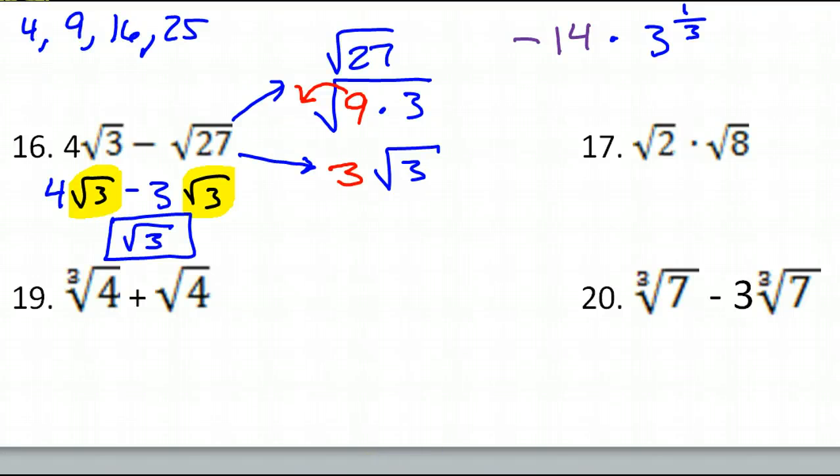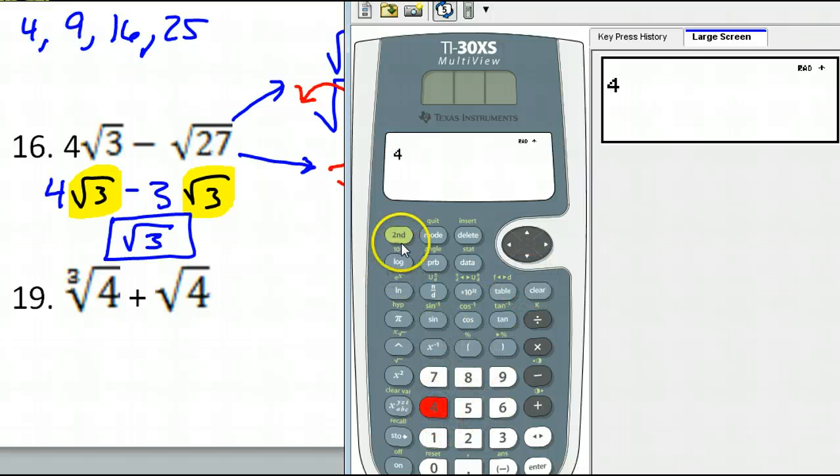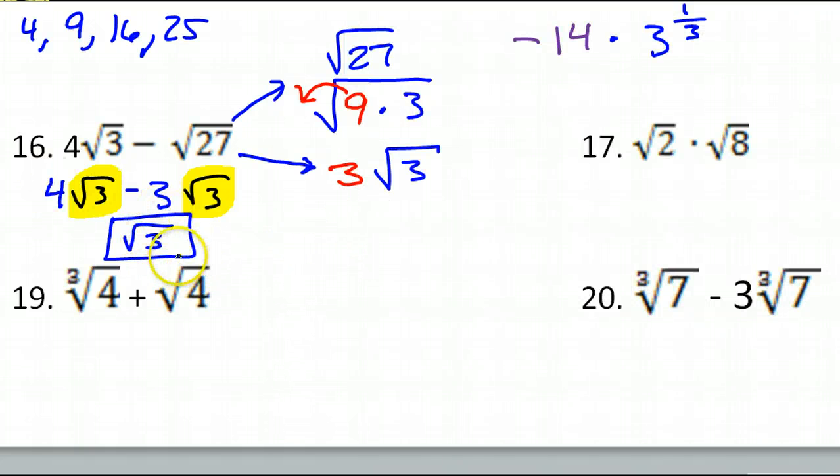And once again, let's see if the calculator would have been able to do this one. 4 radical 3 minus radical 27, and that's radical 3. So I'll be so upset if anybody gets a problem wrong that you could have done on the calculator. Now again, you must show your work. If you skip this step and just go straight to radical 3, I'm not going to give you credit. But if you know ahead of time that radical 3 is going to be the answer, it will probably help you figure out what you need to do.